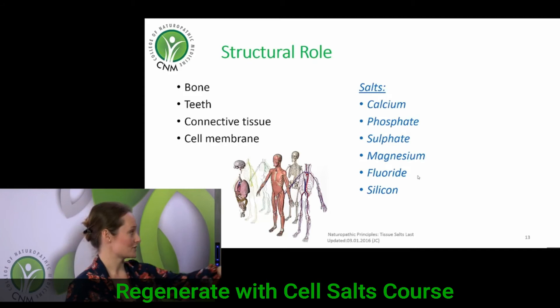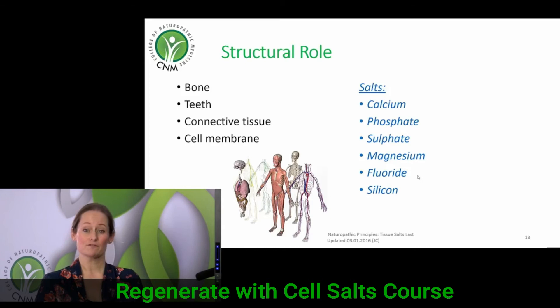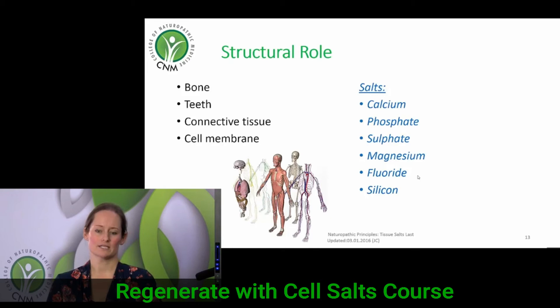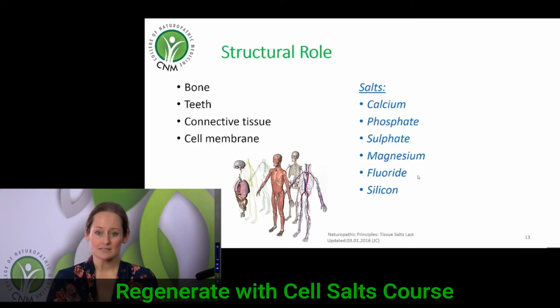Phosphates — calcium phosphate is a combination that is a fundamental building block for skeletal structure. We also think of sulfate. Sulfur as an element is found in a variety of different proteins. Our bodies are essentially large collections of proteins — they make hormones, neurotransmitters, enzymes, and structural proteins. So we can appreciate why sulfates are so valuable from a structural perspective.